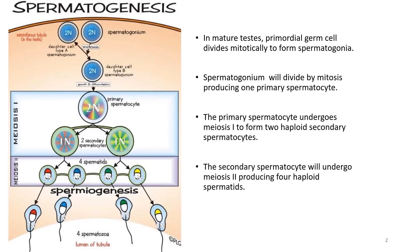In the mature testis, primordial germ cells divide by mitosis to form spermatogonia. One spermatogonium will divide again by mitosis to produce one primary spermatocyte. The primary spermatocyte is diploid because it divided by mitosis.